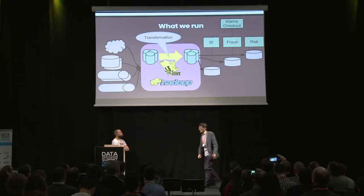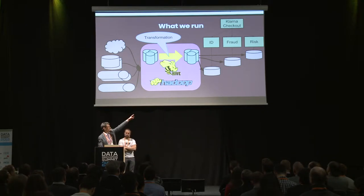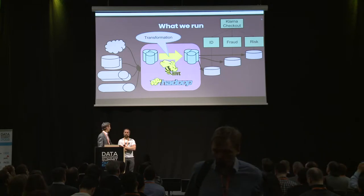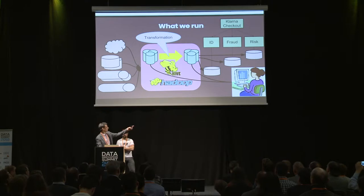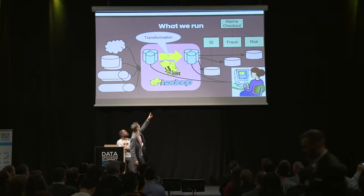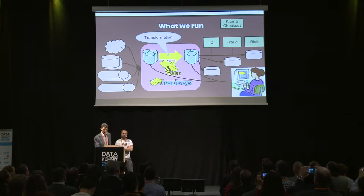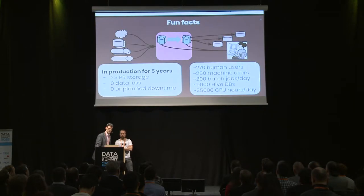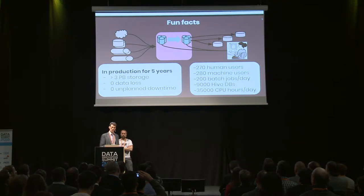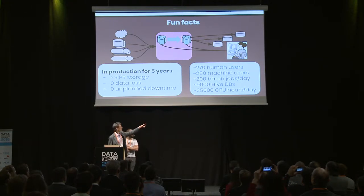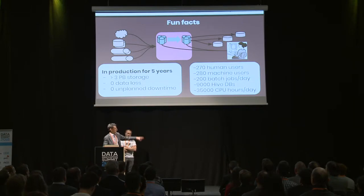We have rather high demands on how the data is organized on the right-hand side outside Hadoop — that's a serving layer. In addition to these machine users, we also have human users: an analyst looking at the yellow arrow trying to figure out if a blue arrow is smarter. Some fun facts: we've been in production for five years, a bunch of petabytes of storage, we never lost data, never had unplanned downtime. We have 9,000 Hive databases and counting, and a bunch of CPU hours spent per day.